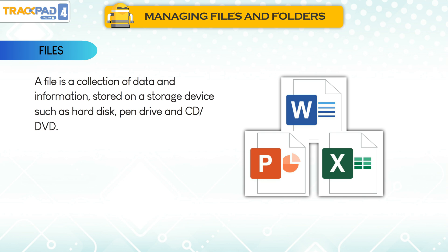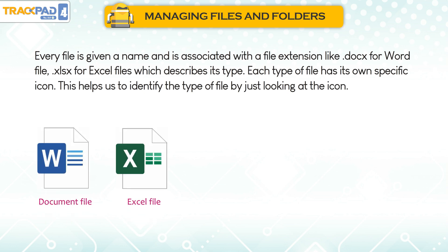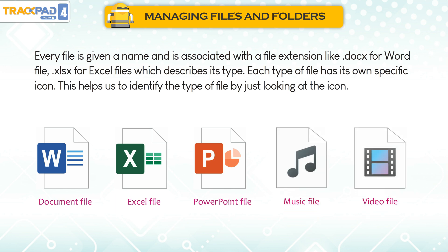A file is a collection of data and information stored on a storage device such as a hard disk, pen drive, and CD or DVD. Every file is given a name and is associated with a file extension, like .docx for Word files and .xlsx for Excel files, which describes its type.